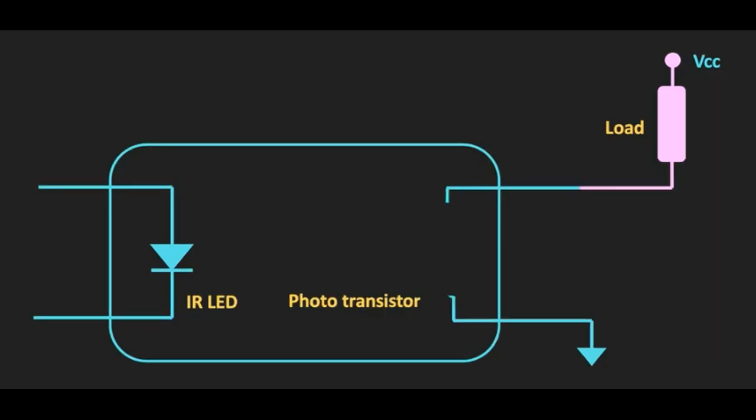In the absence of electrical signal LED will remain in off condition. In this case no photocurrent will be generated on detector side. In this case photosensitive device will act as open circuit.